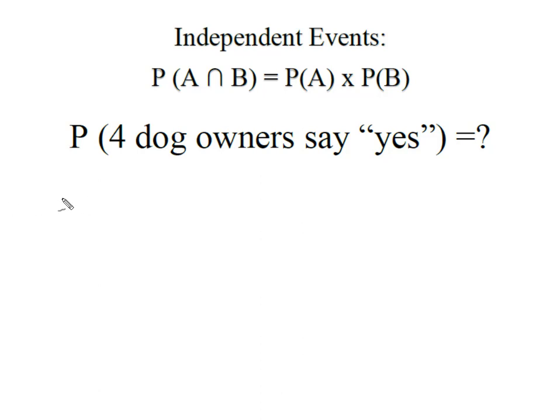When we know that the probability that people in general said yes was 32%, that means that the probability that the first person says yes is 32%, and the probability of the second saying yes is the same. The probability of the third person saying yes is the same, and the probability of the fourth person saying yes is the same. So I simply multiply all of those likelihoods together and I get 0.01048, which when I convert it to a percentage is 1.05%.